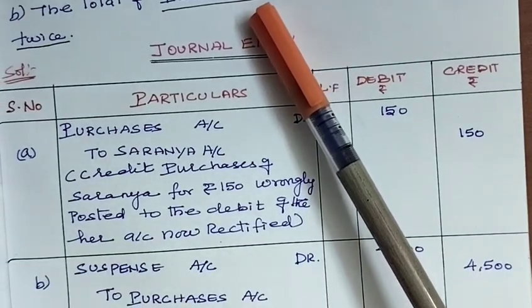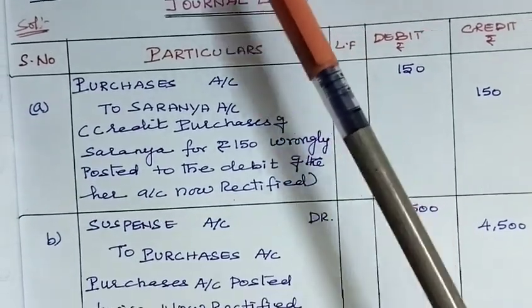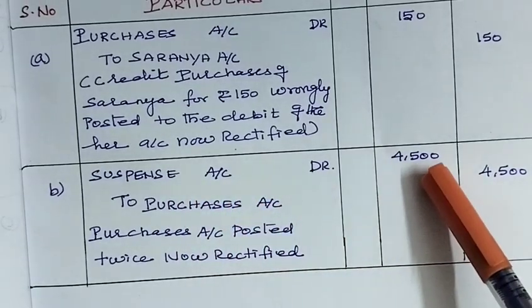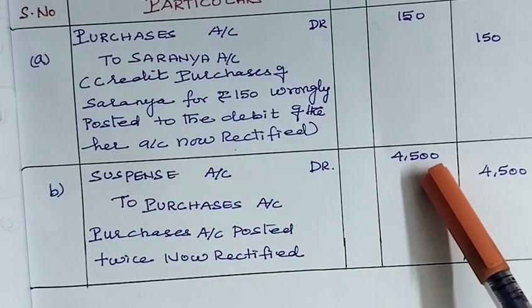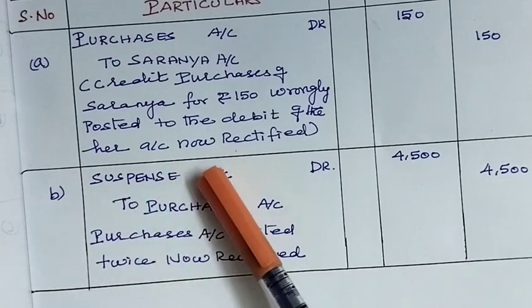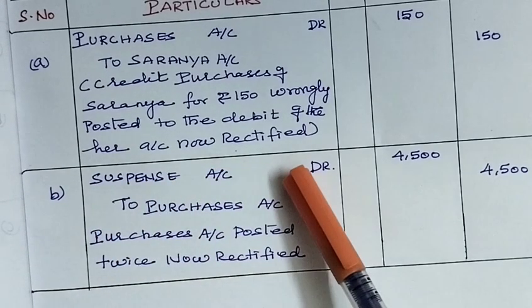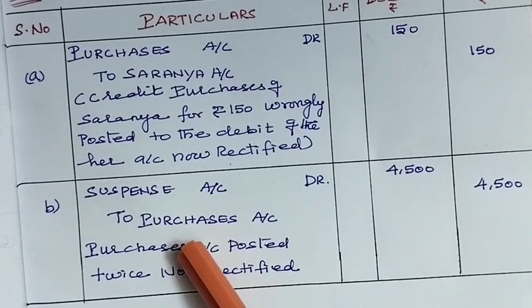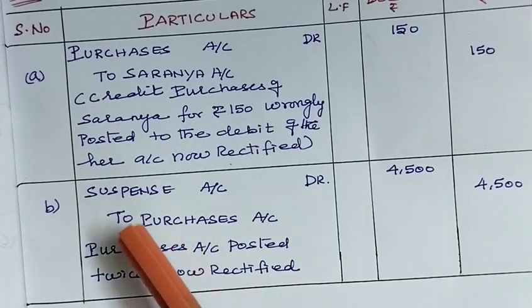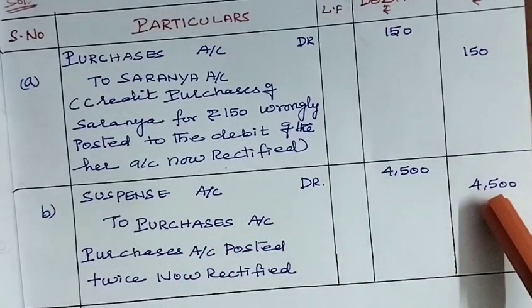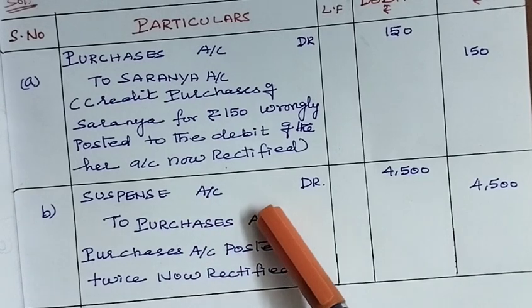What is the opposite journal entry for the purchases account? Purchases account should be credited with Rs. 4,500. Only then the error will be rectified. What is the opposite account? We have to use the Suspense account on the debit side. So, what is the rectification journal entry? Suspense account debit Rs. 4,500, to Purchases account Rs. 4,500. Now the error will be rectified.